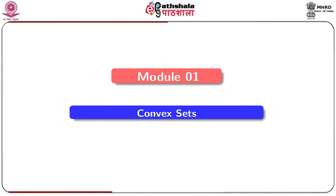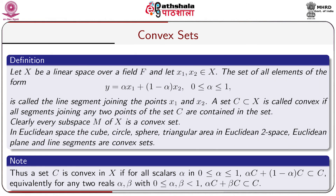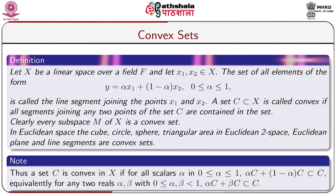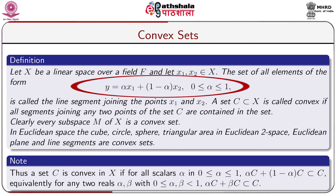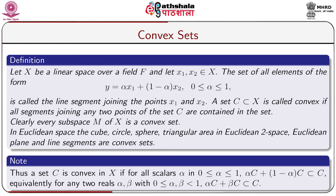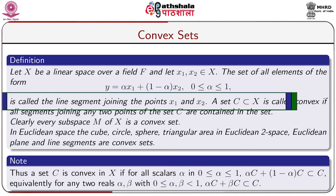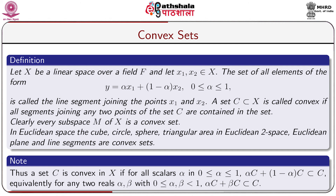The title of module 1 is on convex sets. Let x be a linear space over a field F, where F may be real or complex. Let x₁ and x₂ be any two elements of X. The set of all elements of the form y = αx₁ + (1−α)x₂, where 0 ≤ α ≤ 1, is called the line segment joining the points x₁ and x₂. A set C ⊆ X is called convex if all line segments joining any two points of C are contained in C.